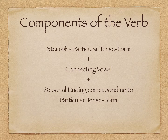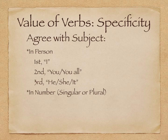We then have a connecting vowel. Following the stem of a particular tense form, the connecting vowel bridges to the ending of the verb — the personal ending that corresponds to a particular tense form. Those three items provide a level of specificity to Greek verbs, similar to other inflected languages, that gives authors an opportunity to nuance an idea one way or another.